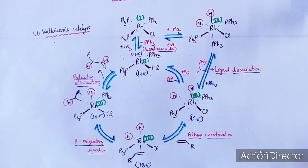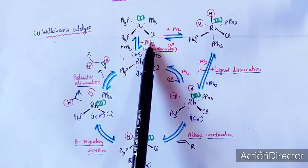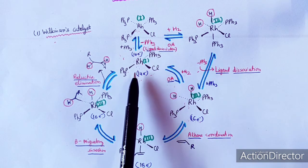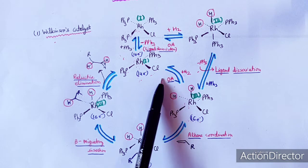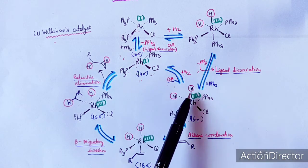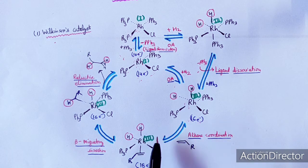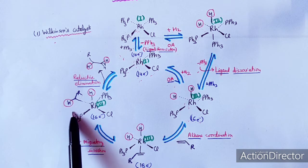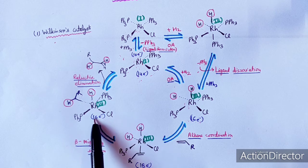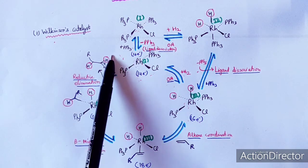To repeat the cycle: the Wilkinson catalyst loses one PPh3 ligand due to its bulky nature, becoming a 14-electron active catalyst. This active catalyst oxidatively adds H2, converting Rh(I) to Rh(III) to give a 16-electron system. The olefin then coordinates to give an 18-electron species, beta migratory insertion occurs, reverting to a 16-electron species, and reductive elimination regenerates the catalyst and forms the product.